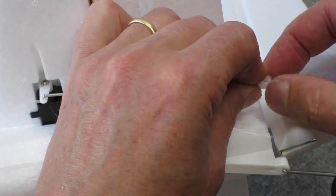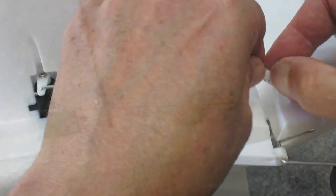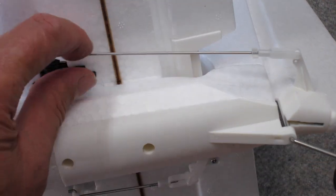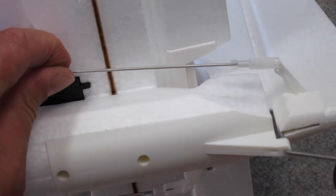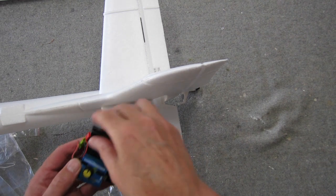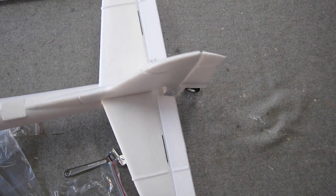So that was the elevator, so we just do the same procedure for the rudder. Make sure it's all operating smoothly. And a quick check with the servo tester just to make sure the connections are still good.